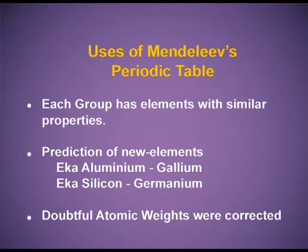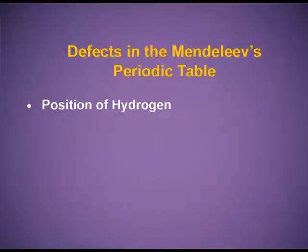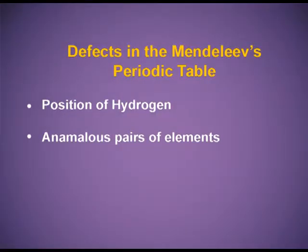Defects in Mendeleev's periodic table: Position of hydrogen — hydrogen resembles in its properties the alkali metals as well as halogens. Its position was disputed and its correct position was not allotted in Mendeleev's periodic table. Anomalous pairs of elements — elements with higher atomic weight were placed before elements with lower atomic weight. For example, iodine with atomic weight 127 was placed before tellurium with atomic weight 128. Position of isotopes — isotopes have different atomic weights but Mendeleev placed them together.